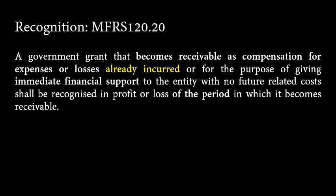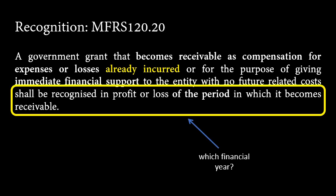For grants that are given as compensation for expenses or losses already incurred in prior financial years, or for immediate financial support that has no future related costs, the question is: in which financial year should the grant be recognized? The year the expenses or losses were incurred — that is, retrospectively — or should it be recognized in the financial year when the cash is received? For this type of compensation, we should recognize the grant in the financial year when the grant becomes receivable — that is, when the grant becomes probable to be received. We neither need to wait until the cash is received nor recognize it in the year the expenses or losses were incurred.